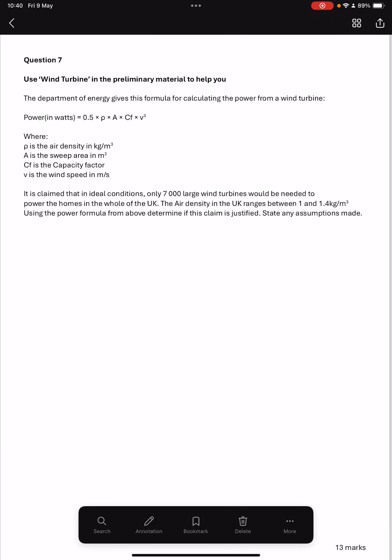Question 7 on Cormac's Predictive Paper for 2025 links to the wind turbine in the preliminary material. It's a horrible question. The Department of Energy gives this formula for calculating the power from a wind turbine.